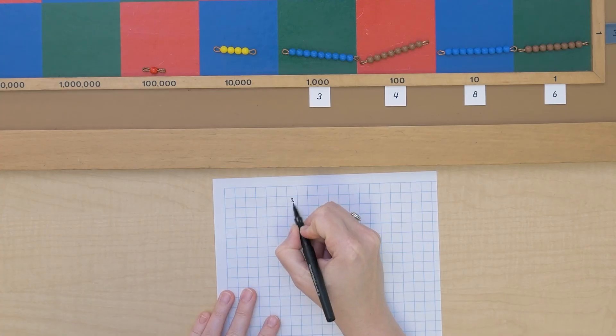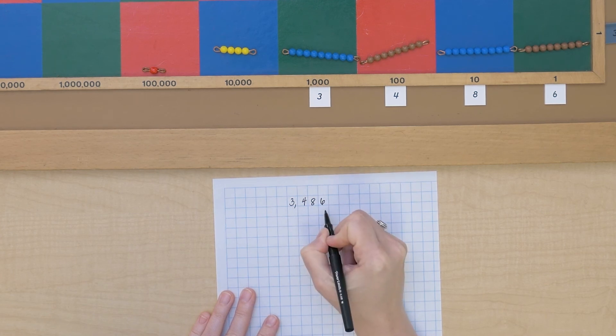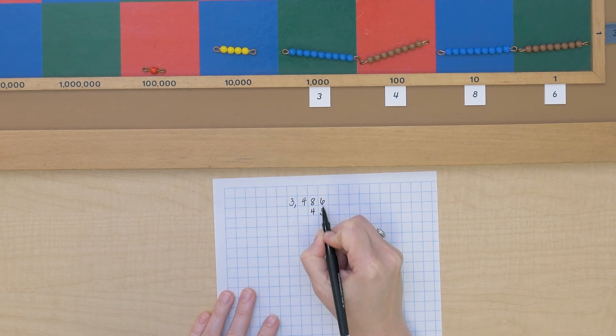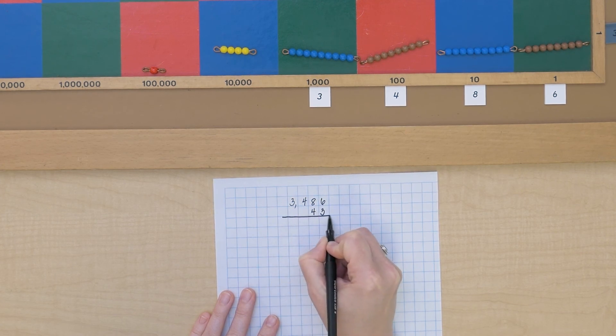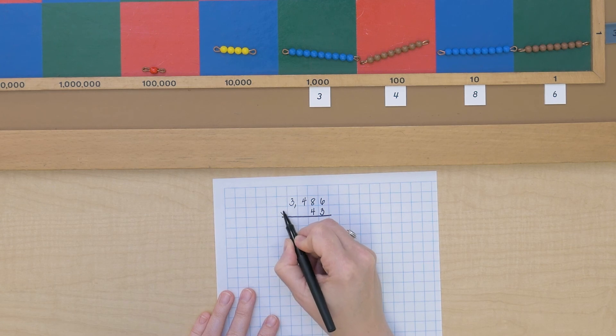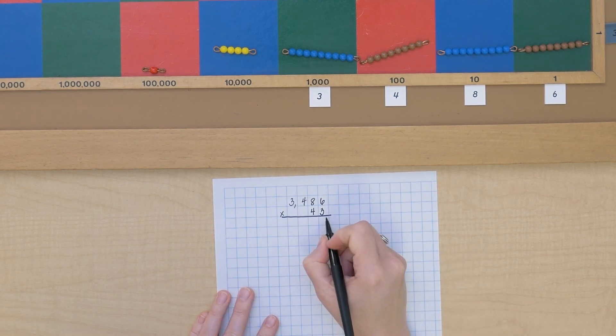Now we could write this down as well. Let me show you. 3,486. There's our multiplicand. And here we'll put our multiplier right below, lining up in the columns of units and tens. And now we can record our answer, our product.